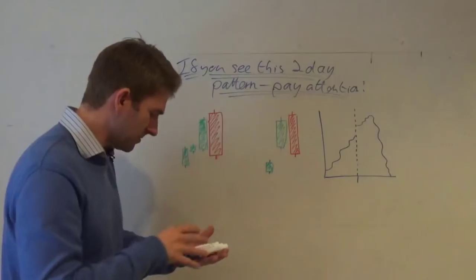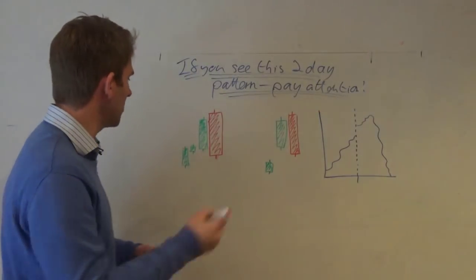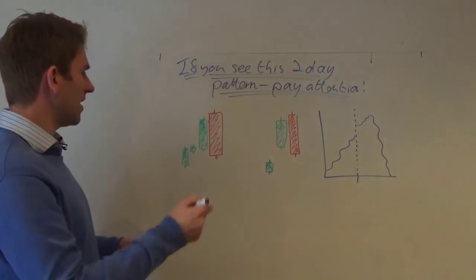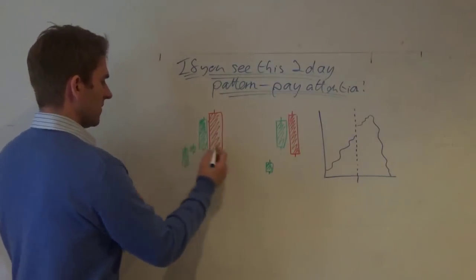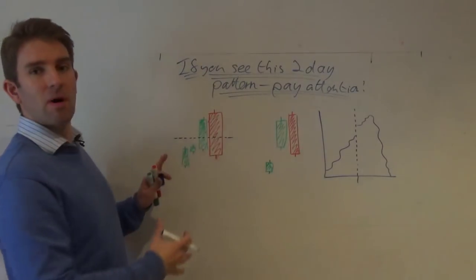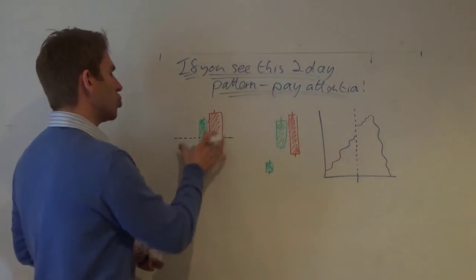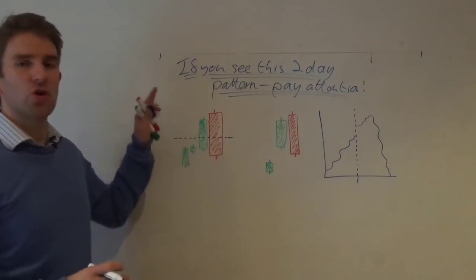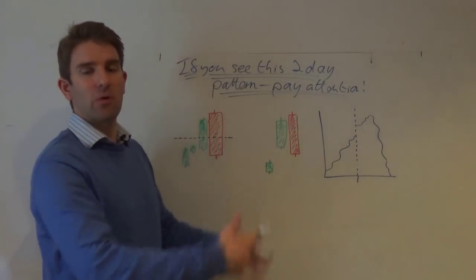So this is the pattern. Let me pick a pen here. We have this kind of scenario: we have a couple of days where the market's pushed up, and then we get a good solid strong green day that breaks out of a key level.